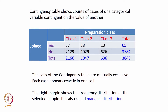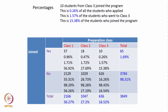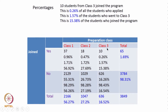We looked at the frequency distribution of the selected people — that is called the marginal distribution. We then started computing percentages. Looking at the category under 'yes' and class 3: 10 students from class 3 joined the program. 10 out of 65 joined, but 10 out of 3849 who applied is 0.26 percent of all people who applied and joined while having gone to class 3.